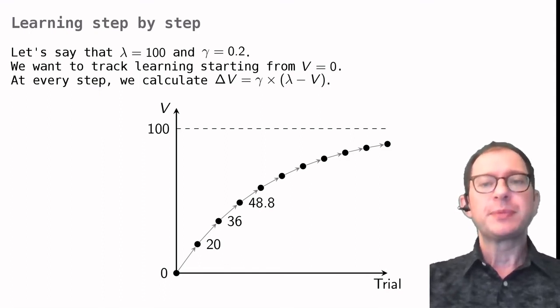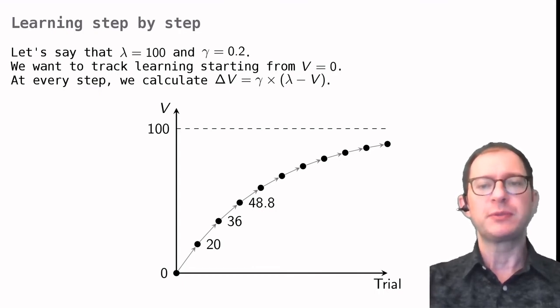When will learning stop? In the RW model, the only way for delta V to be zero, that is for there being no further change in associative strength, is for the error to be zero. That means that what you should do must be the same as what you actually do. In other words, learning continues until it has gotten rid of all of the error.